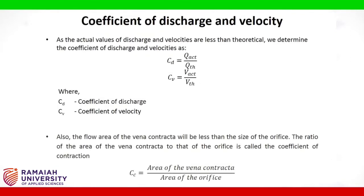As the actual values of discharge and velocity are less than theoretical, we determine the coefficient of discharge CD as Q actual divided by Q theoretical, and the coefficient of velocity CV as V actual divided by V theoretical. Also, the flow area of the vena contracta will be less than the size of the orifice.